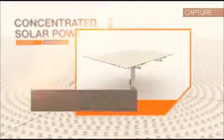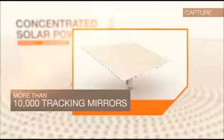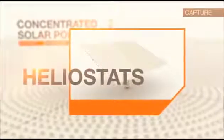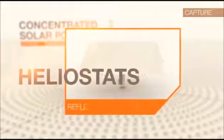More than 10,000 tracking mirrors, called heliostats, reside in a 4 square mile field where they reflect and concentrate sunlight onto a large heat exchanger called a receiver.